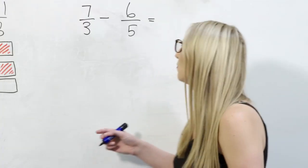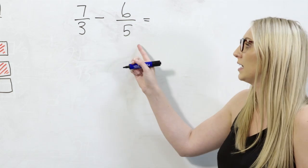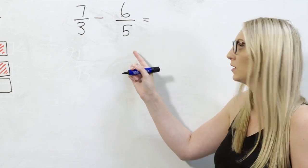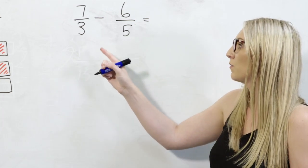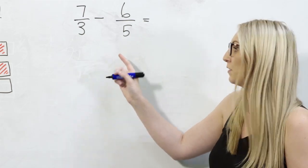Now in this example we're subtracting fractions that have unrelated denominators so we need to find a common denominator. To do that we find the lowest common multiple which is 15.